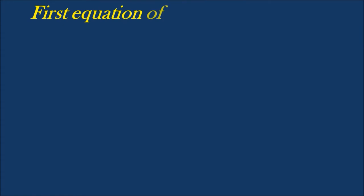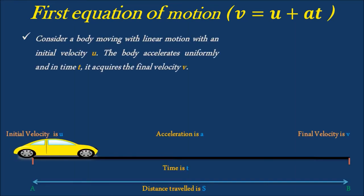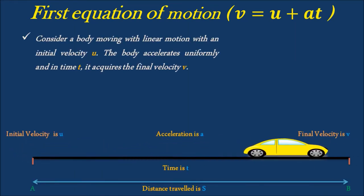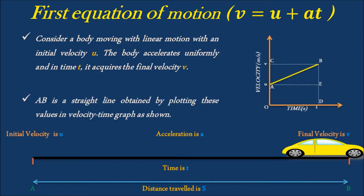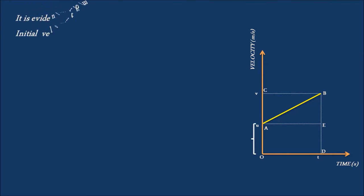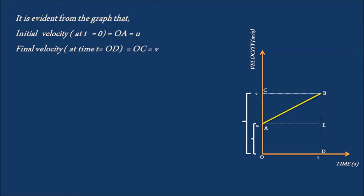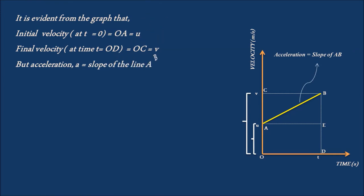Now, let's derive the expression for the first equation of motion, that is, V is equal to U plus A into T. Consider a body moving with linear motion with an initial velocity U. The body accelerates uniformly, and in time T it acquires the final velocity V. Then AB is a straight line obtained by plotting these values in a velocity-time graph as shown. It is evident from the graph that initial velocity at T equal to 0 is OA equal to U. Final velocity at time T equal to OD is OC equal to V. Acceleration A is equal to the slope of the line AB.